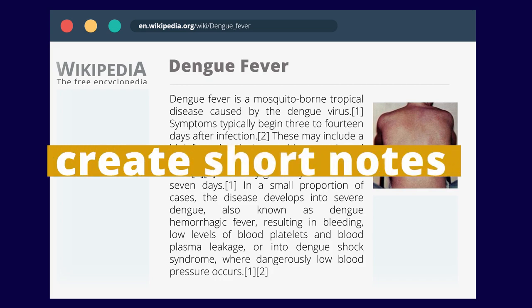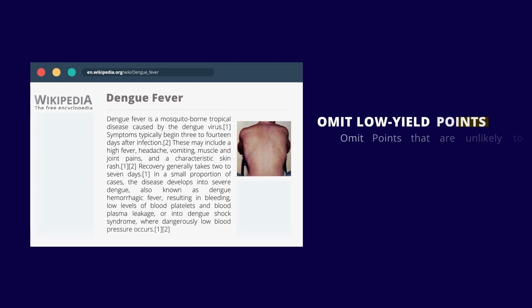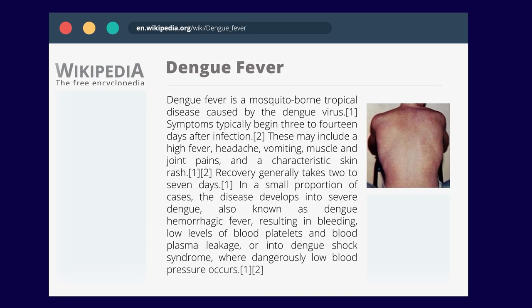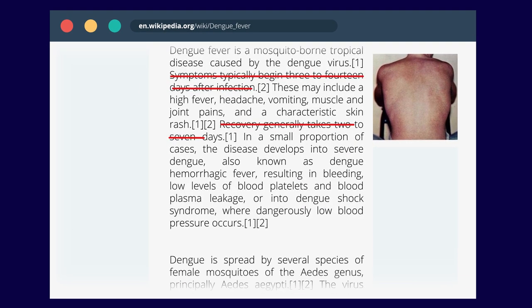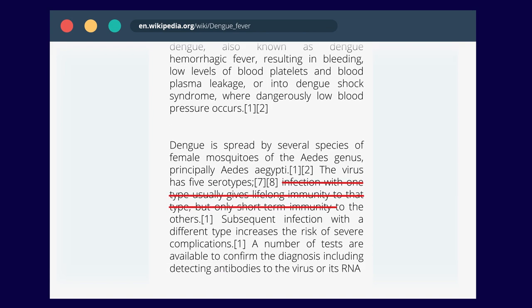The second step is to create short notes. If a point is unlikely to be tested in an exam, omit it. I'm omitting certain points as I believe they are neither high yield nor likely to be tested.